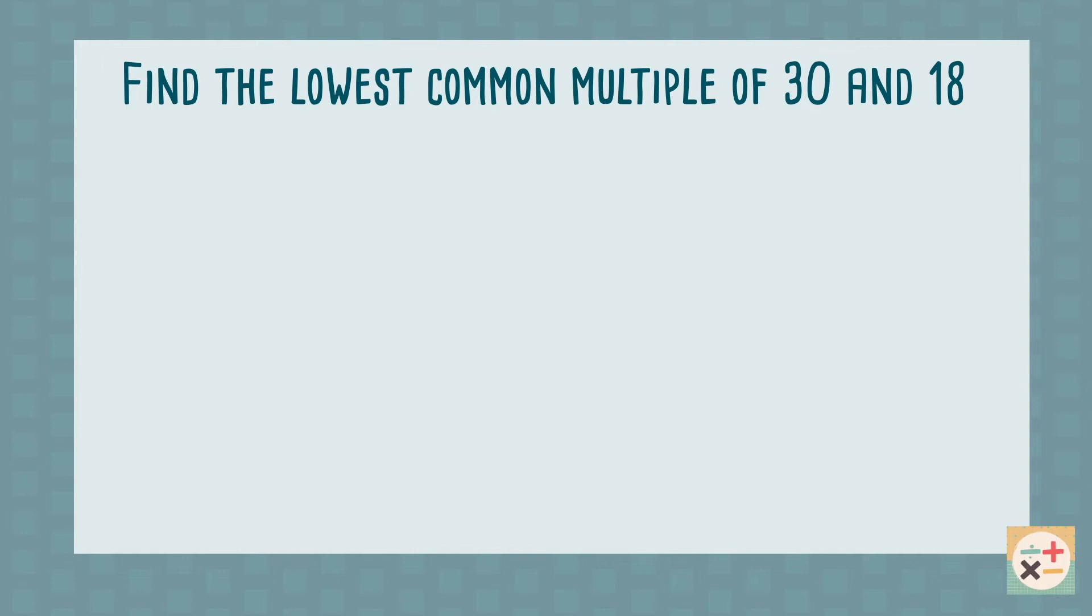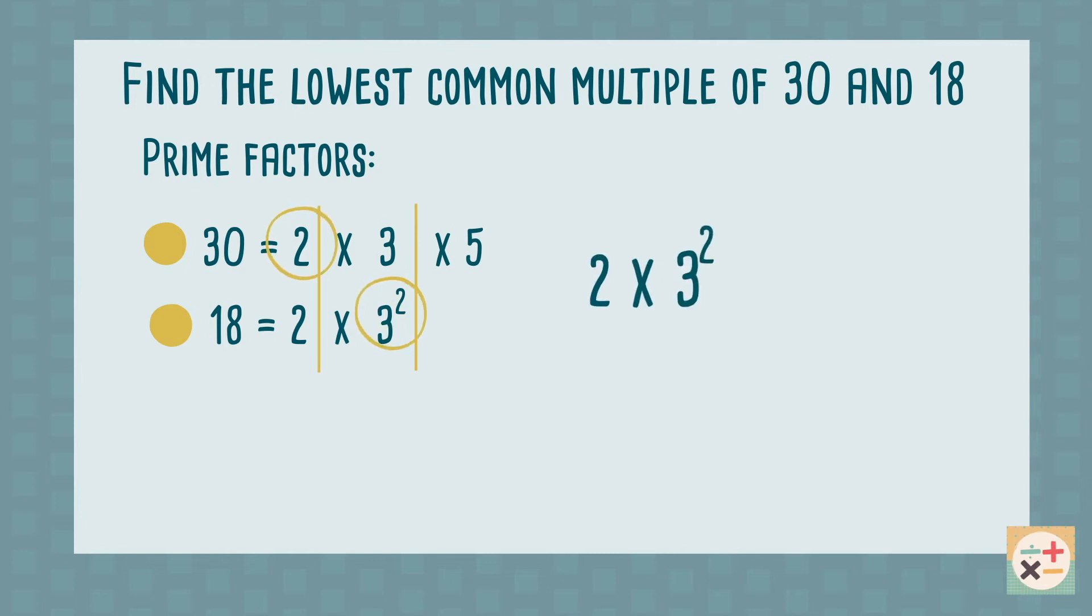Firstly, write out all the prime factors of each number, making sure that each different prime is lined up in a column. Then take the highest power of the prime in each column and multiply them together. The resulting number is the lowest common multiple.